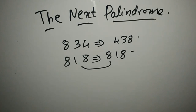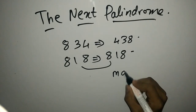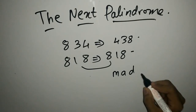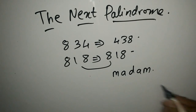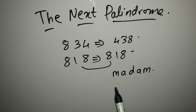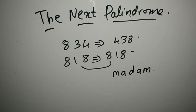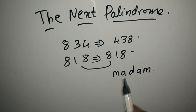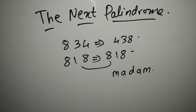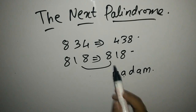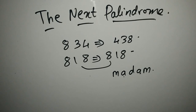Palindrome in words would be a word like 'madam' — M-A-D-A-M. If we spell the word from the right or left side, it remains the same. It's M-A-D-A-M either way, so it doesn't matter from where we spell the word — it remains the same. In numbers, we have to check whether the number is a palindrome or not.